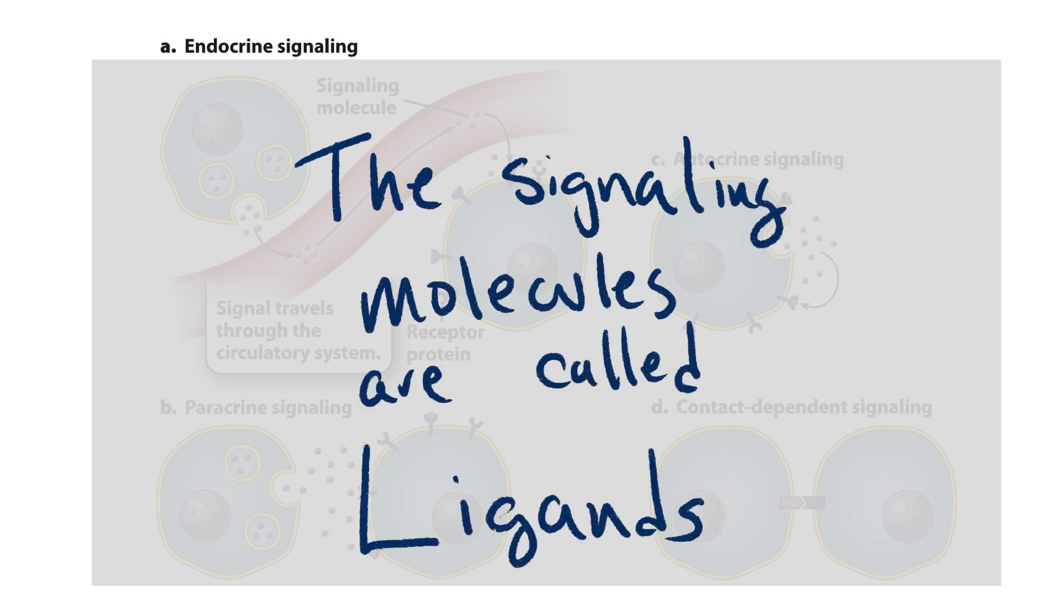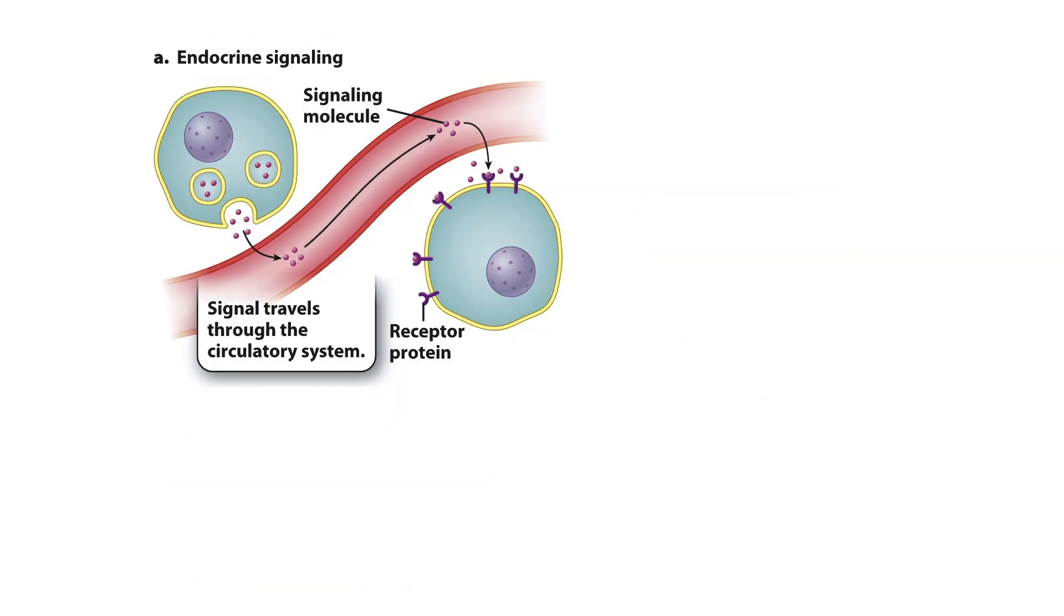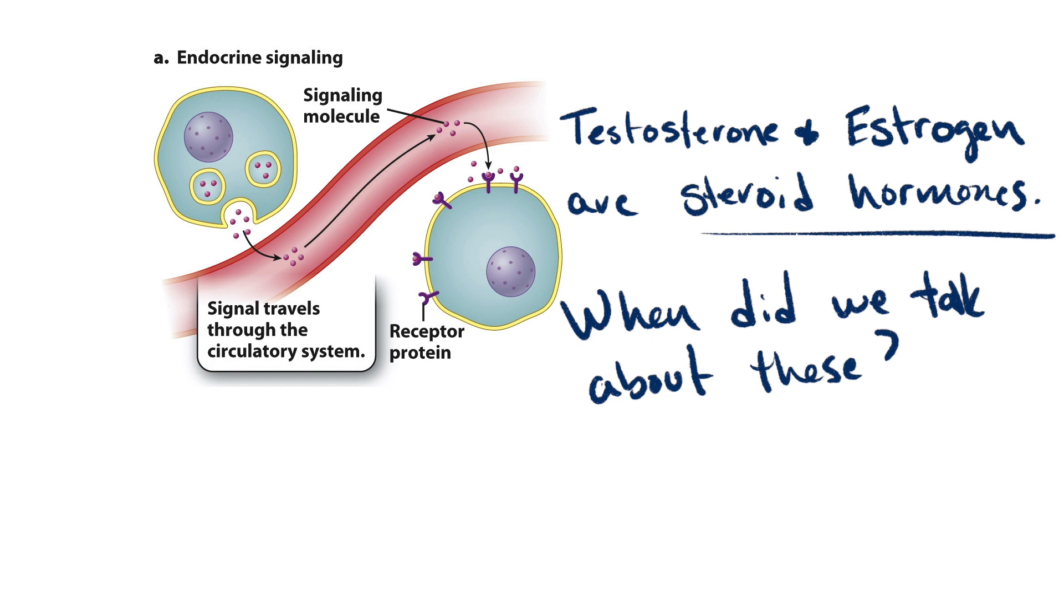The signaling molecules that are sent from one cell to another are called ligands. Endocrine signaling is long distance signaling. Testosterone and estrogen are steroid hormones. Do you remember when we talked about these? It was during the lipid unit.